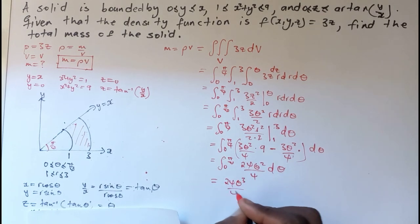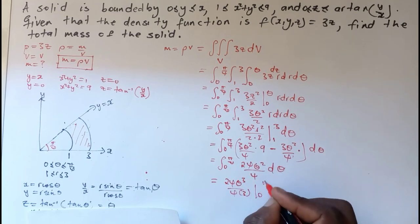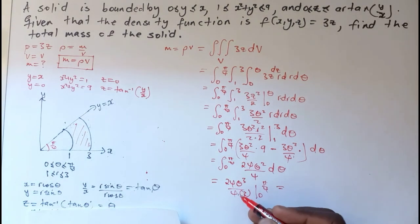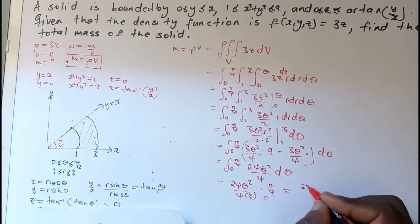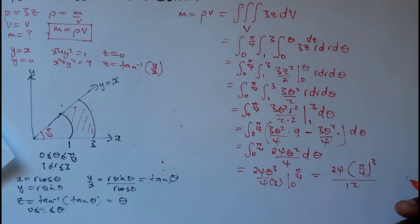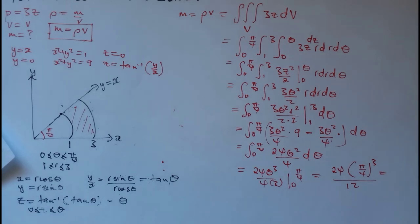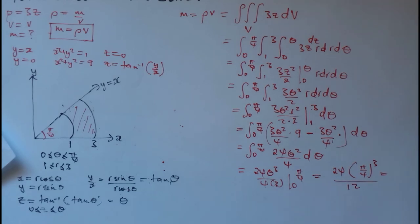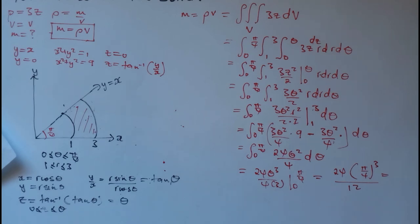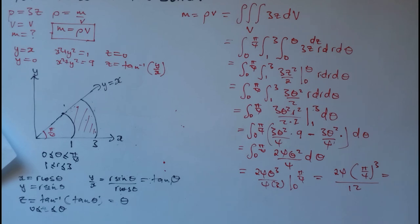Now integrate with respect to θ. Integrating 24θ²/4 gives 24θ³/(4×3) = 24θ³/12, evaluated from 0 to π/4. When θ = 0 we get zero. So the mass equals 24(π/4)³/12. Make sure your calculator is in radians: compute (π/4)³ × 24 ÷ 12.